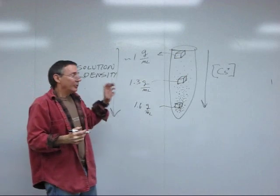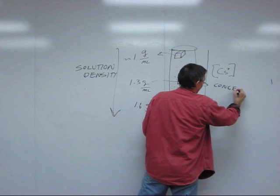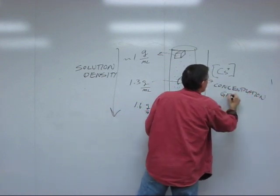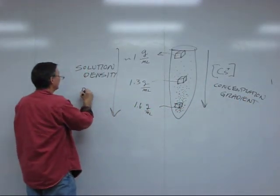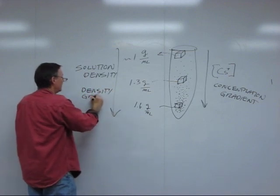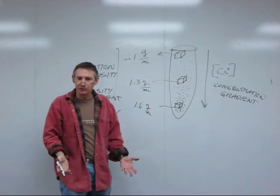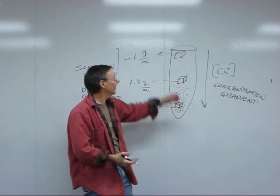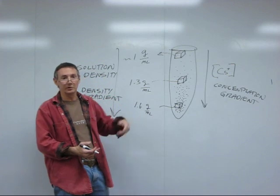Now, this is what we call a gradient. It's a concentration gradient. And when you think about the density of the solution, it's a density gradient. A gradient is some quantity that varies over a distance. There's a smoothly increasing concentration of cesium, smoothly increasing density of the solution as you go down in the tube.